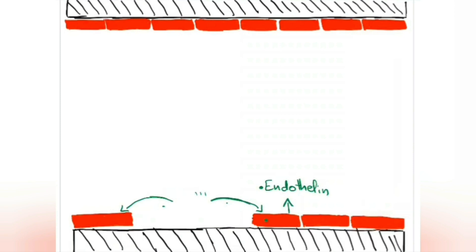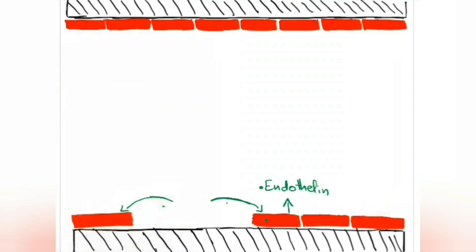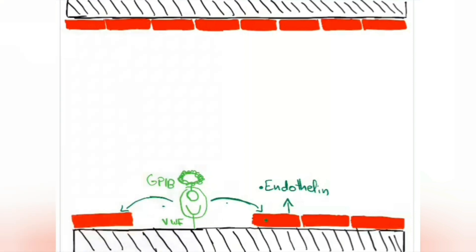Moving on to the second step, which is adhesion. It happens between the blood vessel — through the expression of von Willebrand factor — and the platelet — through the expression of GP1b. The bond between these two is going to stimulate a morphologic change in the platelet. This takes us to step number three: degranulation, where the platelet releases its granules.